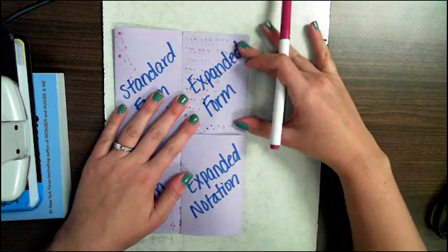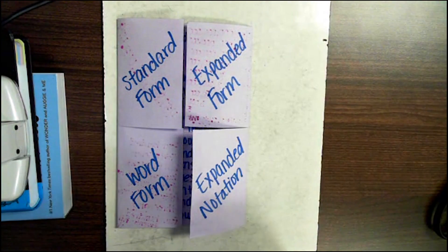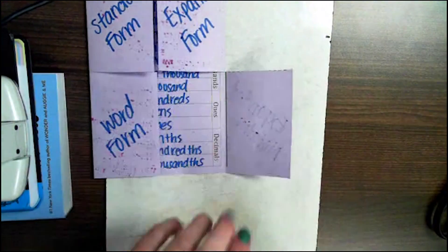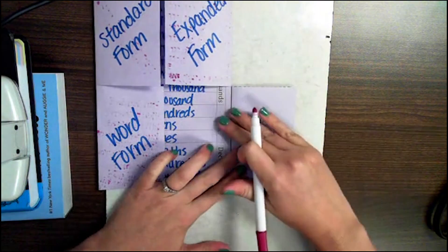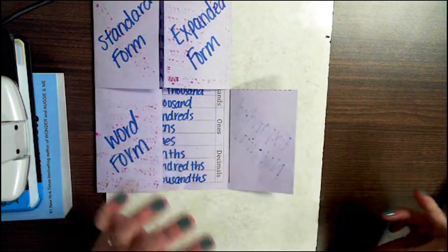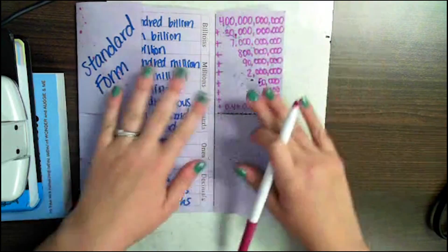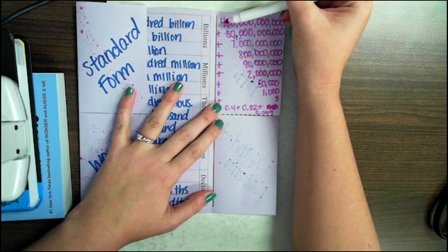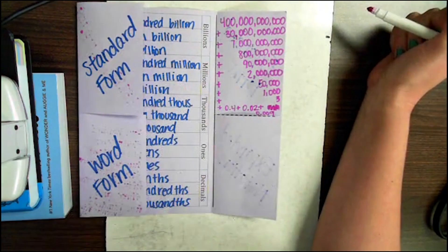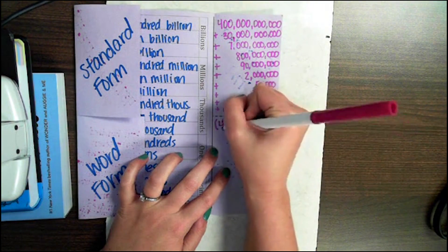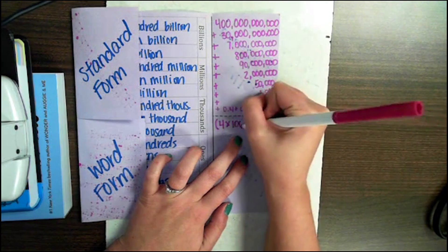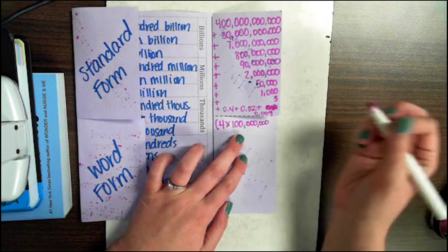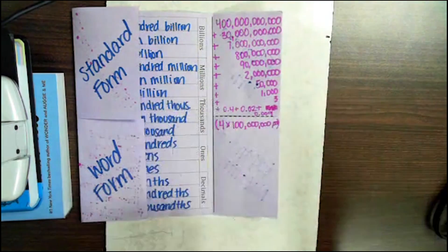Let's go ahead and move on to expanded notation, which is similar to expanded form, but it's technically expanded form expanded even farther. Let's look at expanded notation really fast. I'm going to have my expanded form opened up as well so we can look at that. We're going to start with what is in the hundred billions place, which is 400 billion, but we're going to expand that out even farther, and it's going to look like this: 4 times 100 billion.